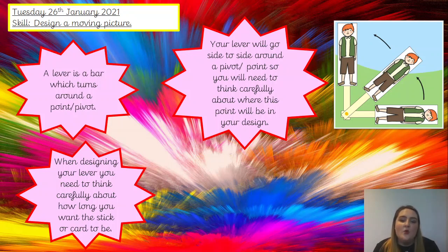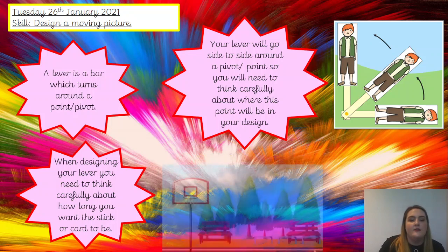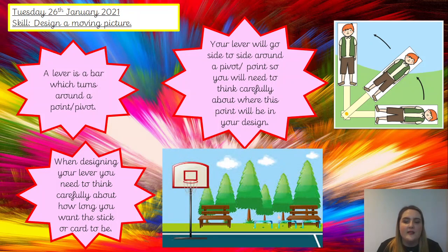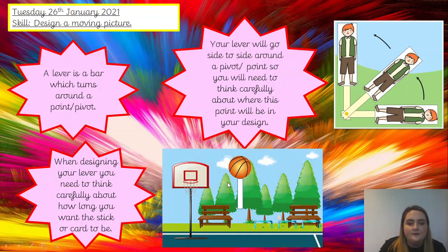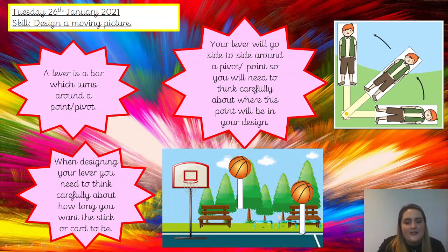You need to think about where your point — your pivot — will be in your design. If we have a look at this example with a basketball court: if I was to have my pivot here, so my basketball could move around, it would go from side to side — it could go into the basketball hoop. But if we were to put my pivot in a different position, it's the same length card, and it was to go side to side, it would not reach the basketball hoop.